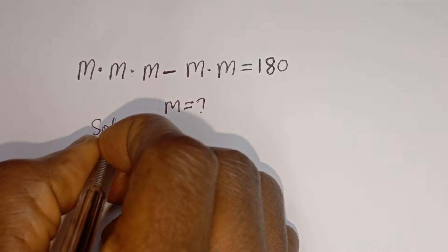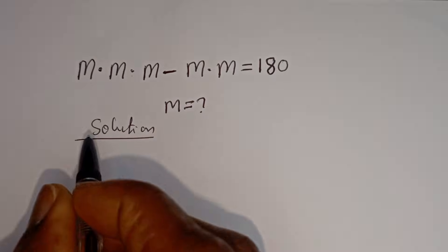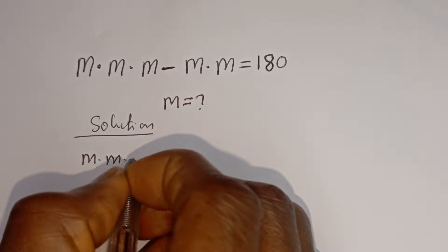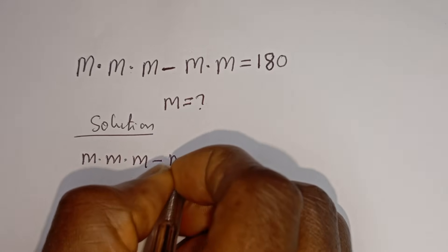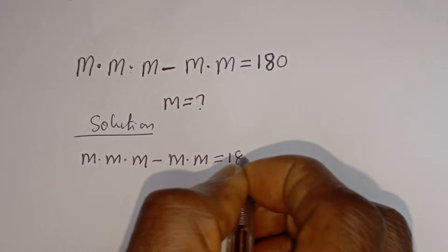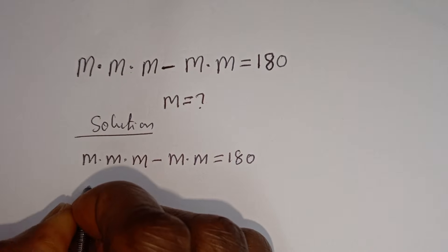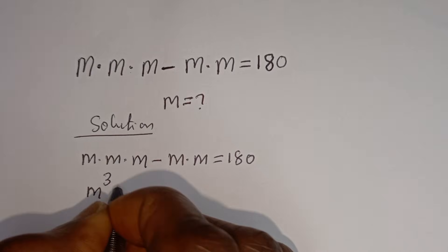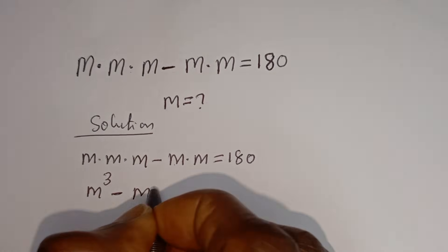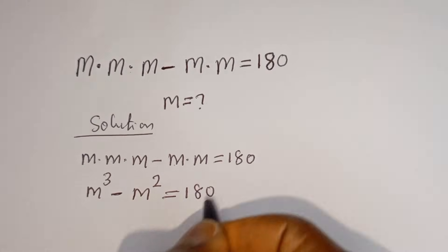Solution. Here we have M multiplied by M multiplied by M, minus M multiplied by M, is equal to 180. Now M times M times M is M cubed, minus M times M which is M squared, is equal to 180.